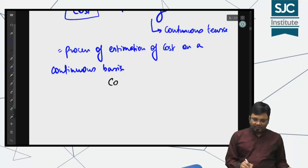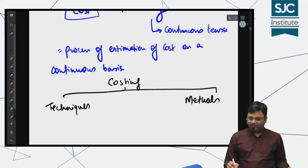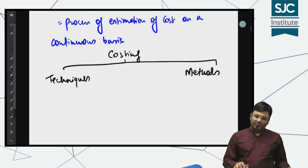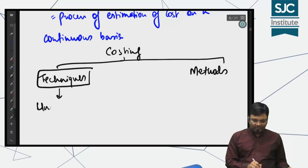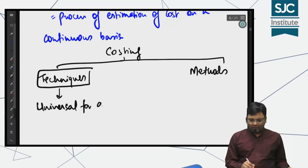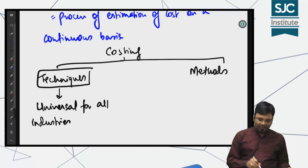Costing में दो पार्ट आता है। एक आता है techniques of costing और दूसरा पार्ट आता है methods of costing। Techniques मतलब यहाँ पे ऐसे कुछ rules आप पढ़ते हो जो सब के लिए लागू हैं — ऐसे rules which are universal for all industries।